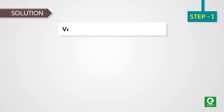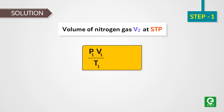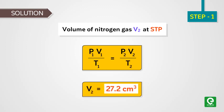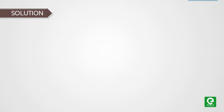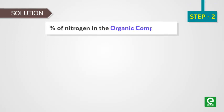Step 1 is to calculate the volume of nitrogen gas V2 at STP. Using the relation P1V1/T1 = P2V2/T2, we get V2 = 27.2 centimeter cube. Step 2 is to calculate the percentage of nitrogen in the organic compound.